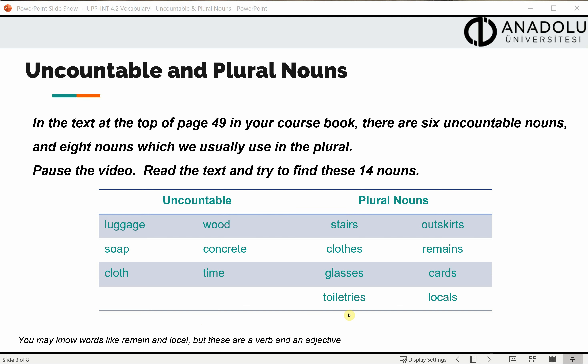Of course you may know words such as remain and local but these are a verb and an adjective respectively. We also have a word in English woods which means a small forest but here we are talking about wood, the material. With a word like card, cards as used in the text, a pack of cards, we can actually say in English pick a card, a common sentence by a magician. So you will hear this one used in a related meaning in its singular form.